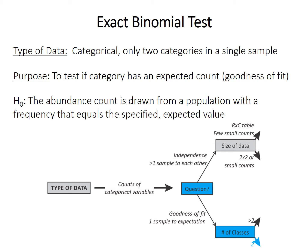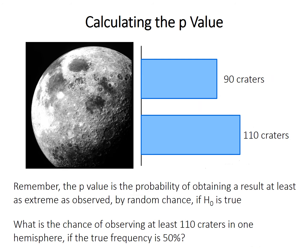Frequency here means the number of times an event occurs in a series of independent observations — how often do we find craters in the southern hemisphere? This test is an exact test: there's no distribution, no test statistic, no degrees of freedom. We just calculate the p-value exactly from the probability of observing the data. The p-value is the probability of obtaining a result at least as extreme as observed if the null hypothesis is true — specifically, the chance of observing at least 110 craters in one hemisphere if the true frequency is 50%.